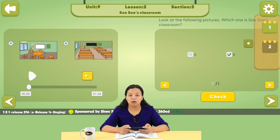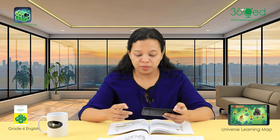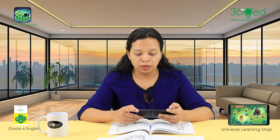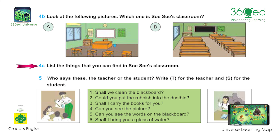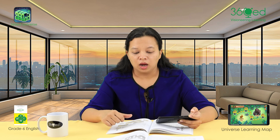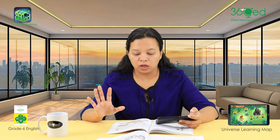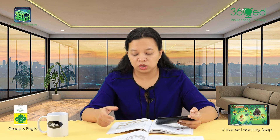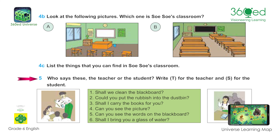Activities 1 and 2 are starting. List the things you can find in Soso's classroom. Number 5 — who says these? The teacher or the student? Write T for teacher and S for student.